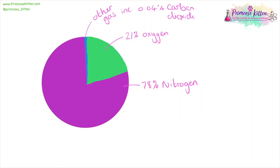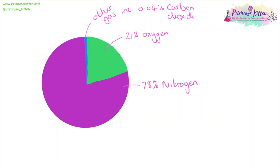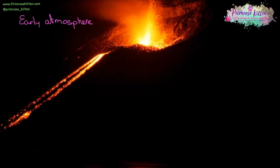The air we breathe is made up of lots of different gases, predominantly nitrogen with about 20–21% oxygen, and then lots of other gases including a small amount of carbon dioxide. This is very different to the early atmosphere, which was mainly formed by things coming out of volcanoes — so we had large amounts of ammonia, methane, water vapour, and carbon dioxide.